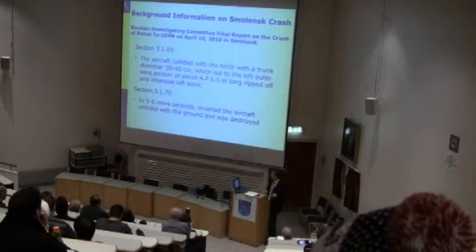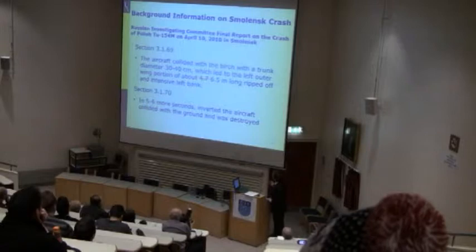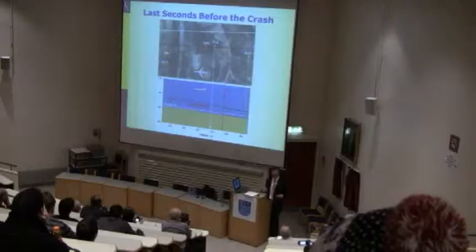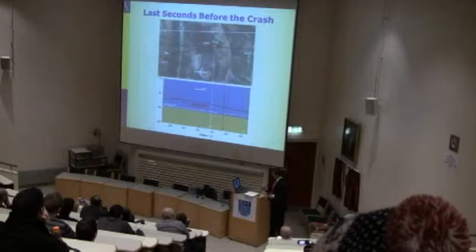The official report, Section 3169, states the aircraft collided with a birch tree with a trunk diameter of 30 to 40 centimeters, which led to the left outer wing portion — first measured at 4.7 meters, then 6.5 meters long — being ripped off. Five or six seconds later, the inverted aircraft collided with the ground and was destroyed. We are talking about the Tupolev 154, similar to the Boeing 727, with about a 40-meter wingspan, 50 meters long, and approximately 100 tons.